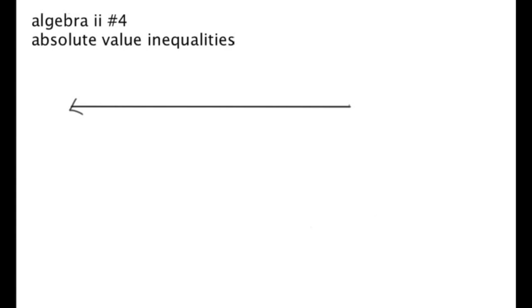Before we get into tackling inequalities, I want to draw a number line. We're going to construct the most basic absolute value inequality and solve two cases. First, we're going to solve the absolute value of x is greater than 9, and then the absolute value of x is less than 9. Based on what we get from solving these, we're going to create some rules that we'll use for the rest of our Algebra 2 solving.